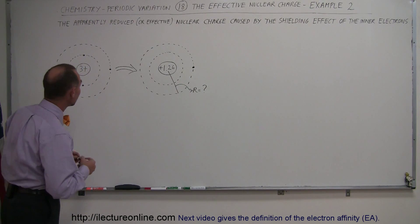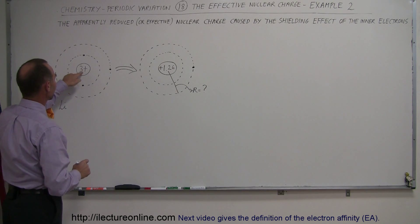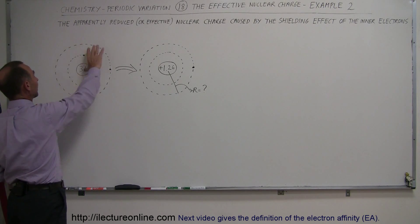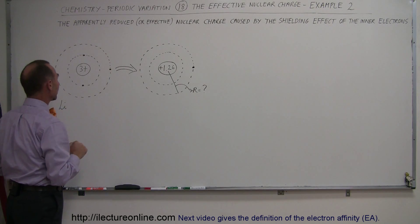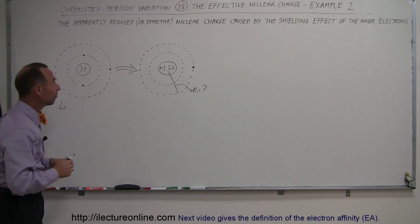As we saw in an earlier video, if we take a look at the lithium atom, lithium has three positive charges in the nucleus because we have three protons. We have three electrons in orbitals around the nucleus, two in the innermost energy level and a third in the second energy level.